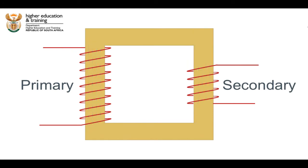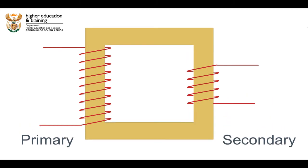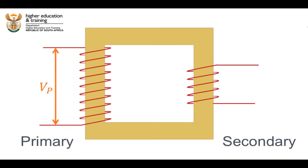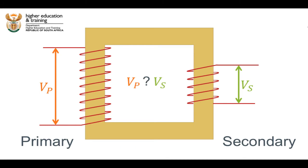So, a voltage applied to the primary coil — V primary, or V subscript P — results in a voltage across the secondary coil — V secondary, or V subscript S. But what is the relationship between these voltages, and how exactly does the transformer transform the voltage? The answer lies in the ratio of turns in the primary and secondary coils.